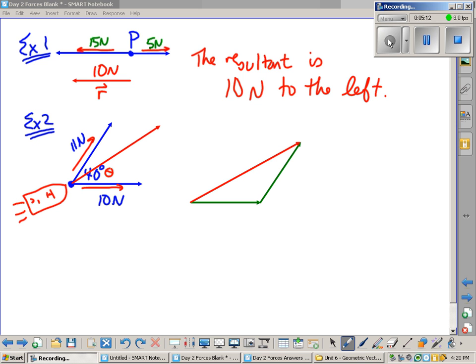So let's put in some known sides. We know that this was the 10 Newton force, and this was the 11 Newton force. And this is my unknown. I'll call it R this time for resultant.